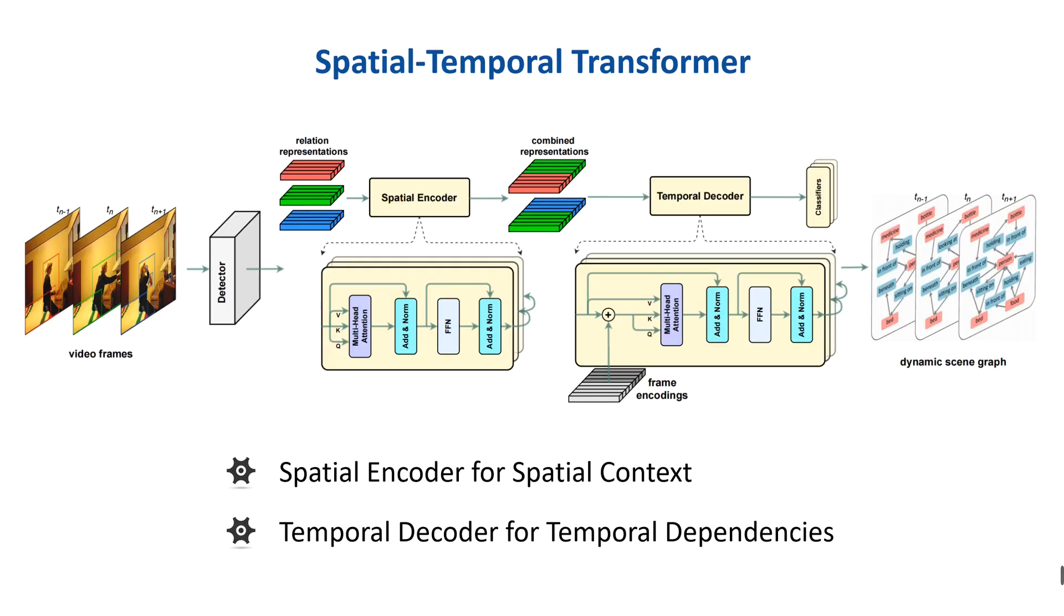To fill this gap, we propose the Spatial Temporal Transformer for dynamic scene graph generation that consists of two modules. A spatial encoder that takes an input frame to extract spatial context and reason about the visual relationships within a frame.